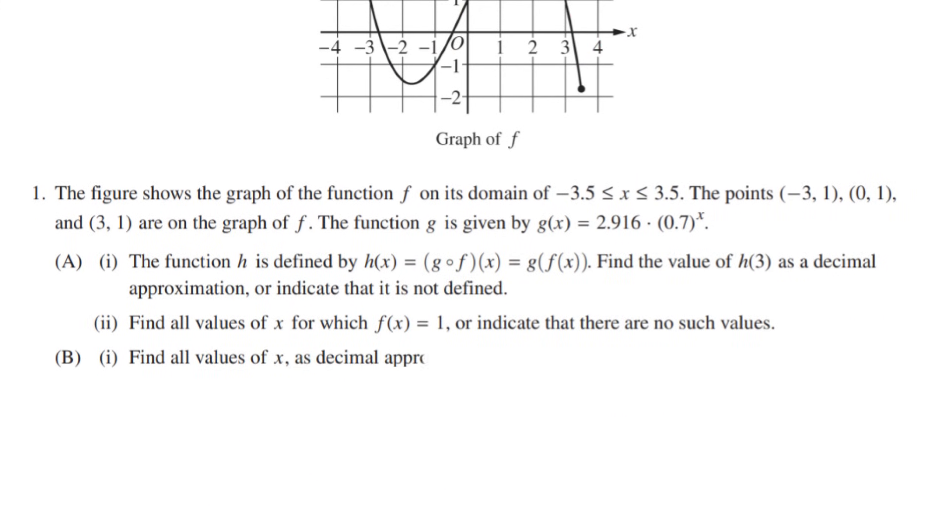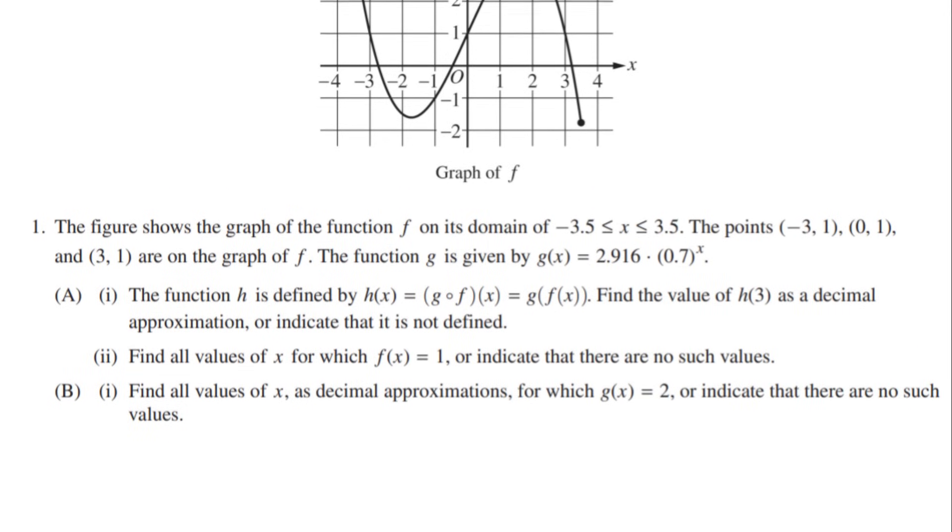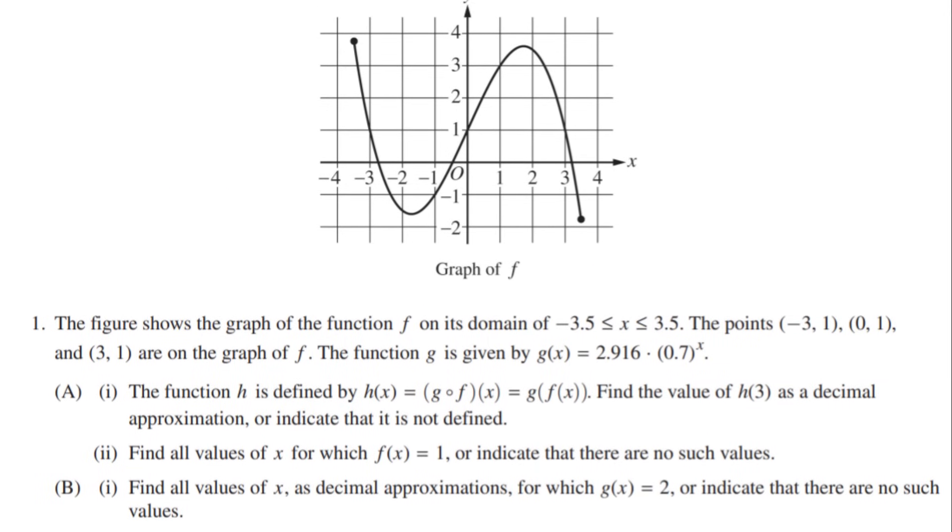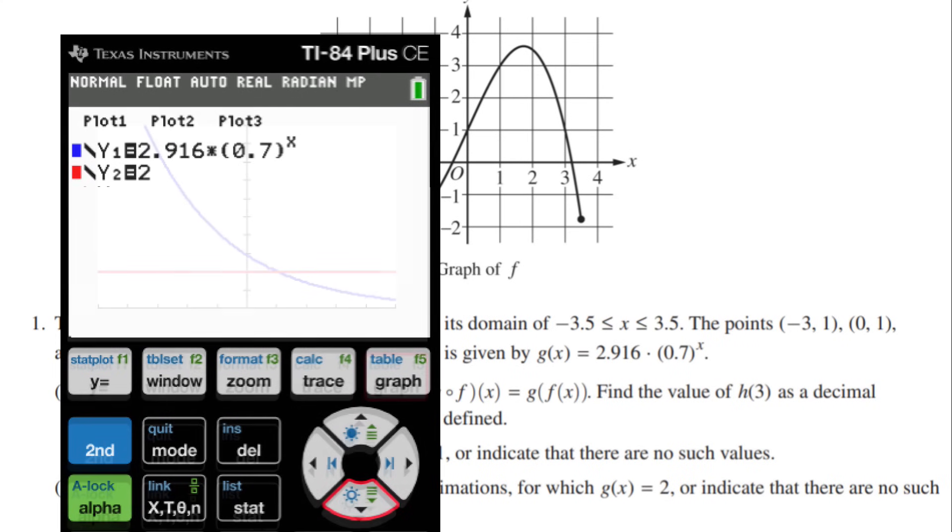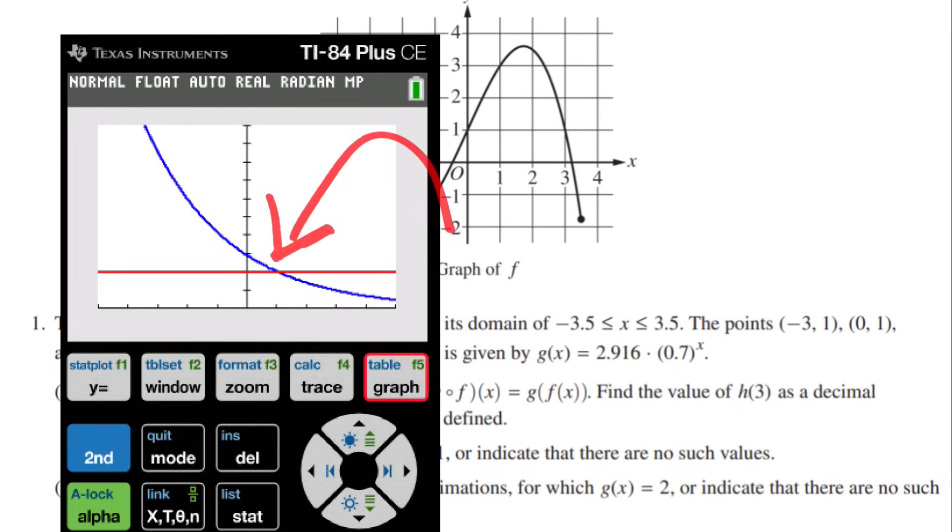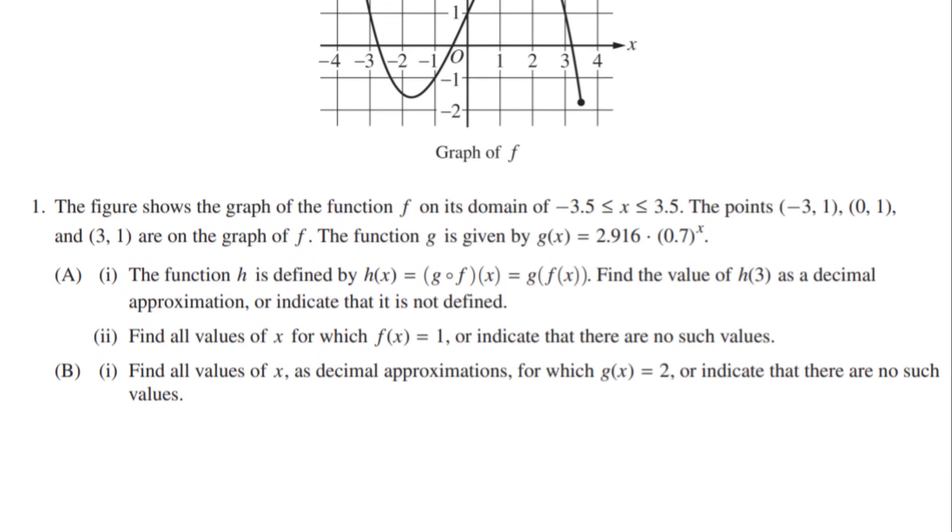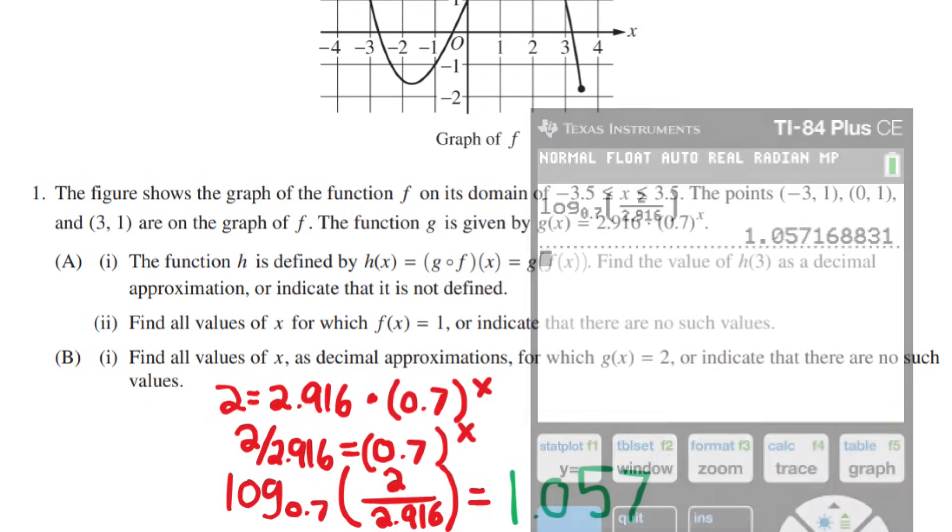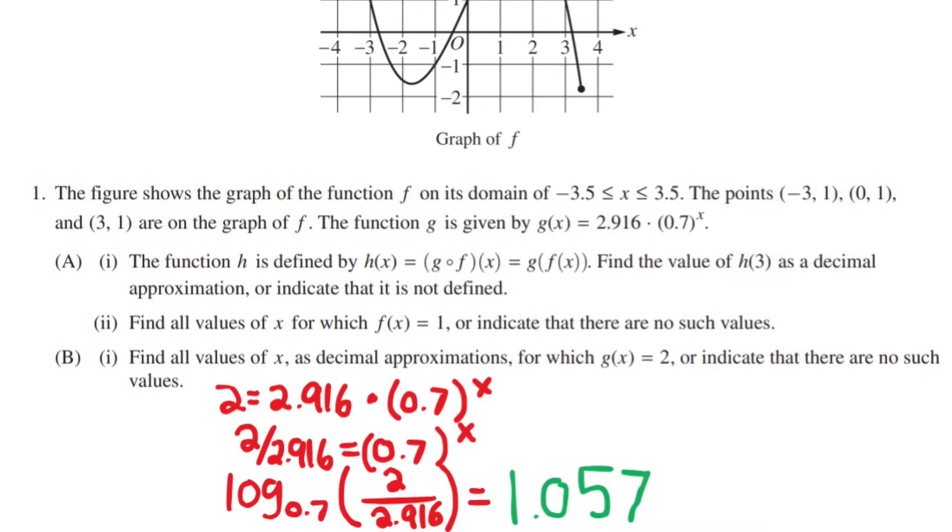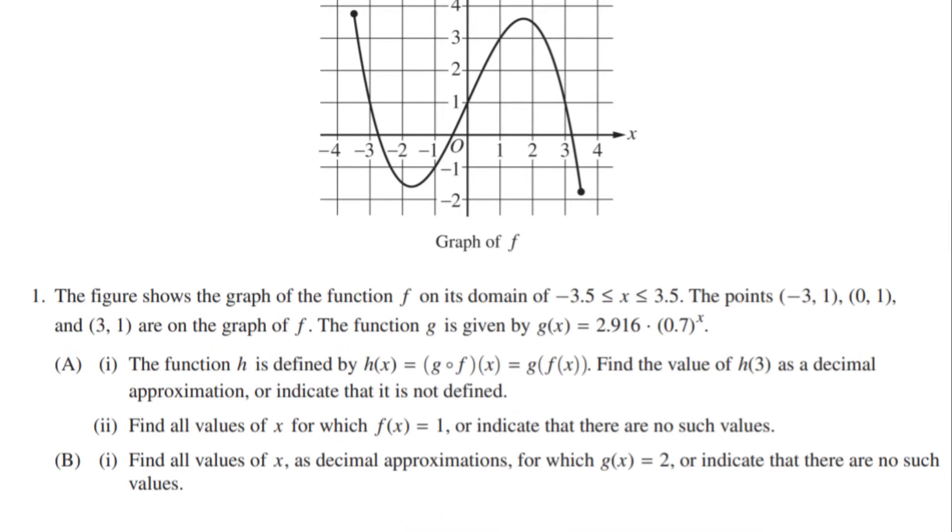Find all values of x as decimal approximations for which g of x is equal to 2, or indicate that there are no such values. Alright, so there are two ways you can do this. The first is that you can go on your calculator and plug the g equation into your y equals, and plug in 2 as another value on your y equals. Then, on any intersection points you find, the x value of it will be your answer. Or you can do it algebraically and start by plugging in 2 for y, then divide the 2.916 from each side. Then, rearranging it into log form, we get log base 0.7 of 2 divided by 2.916. Plug that into your calculator and solve. Whether you do method 1 or 2, you will get the same answer of x equals 1.057.